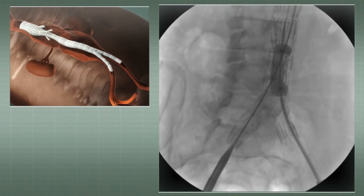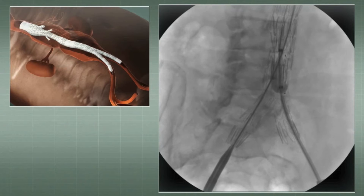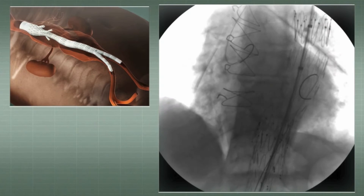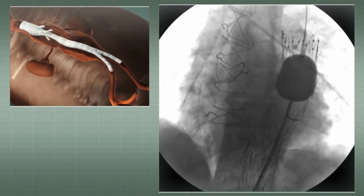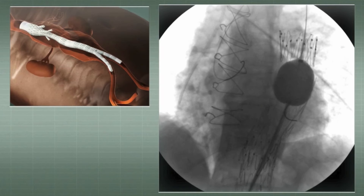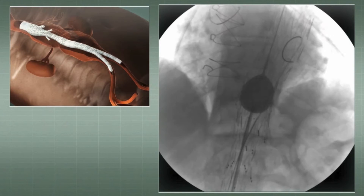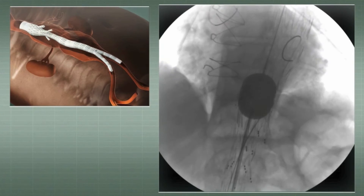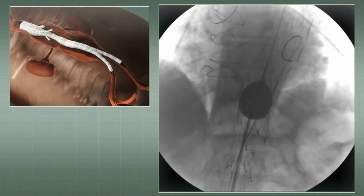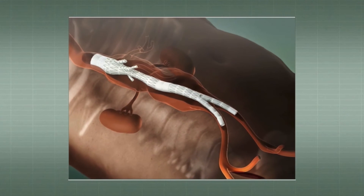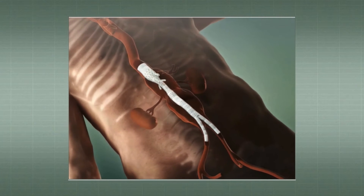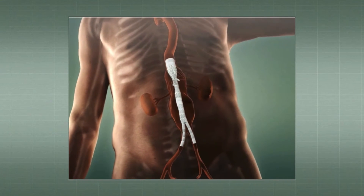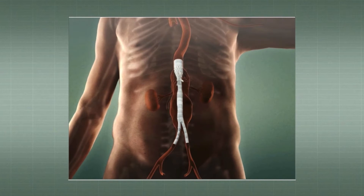With a latex balloon, the entire system is then dilated. At this point, the femoral arteries can be reconstructed to allow perfusion of the inferior limbs, sparing the patient from the risks of metabolic consequences of ischemia.